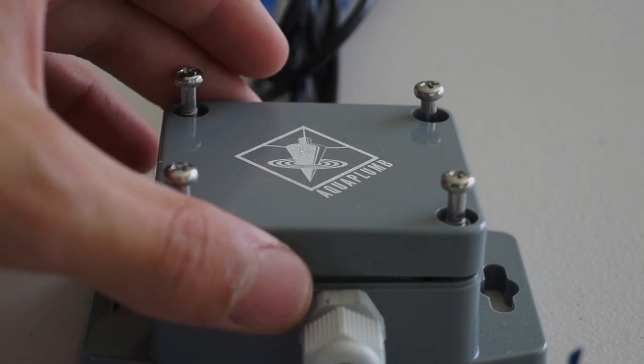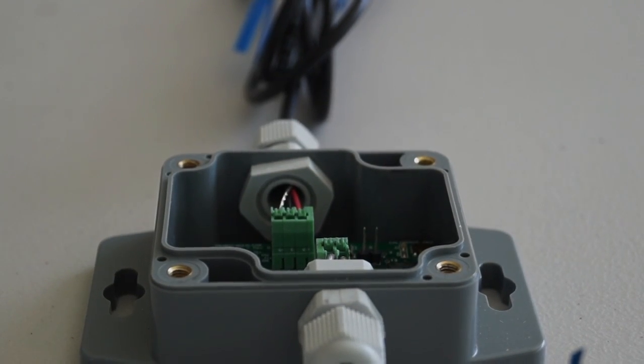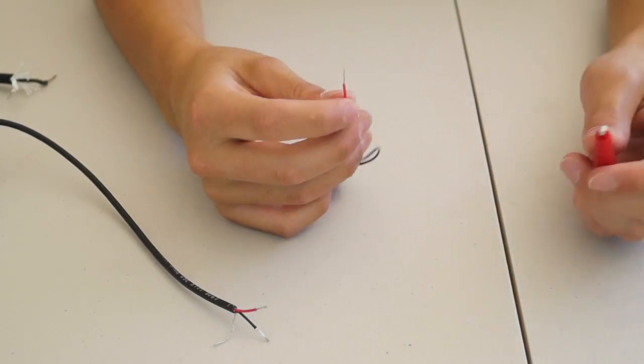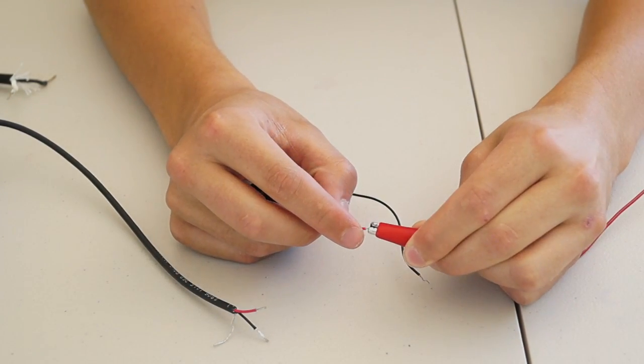Before you begin you will need to unscrew the top cap. To power your aquaplum you will first need to connect the red alligator clip to the red wire from the battery.